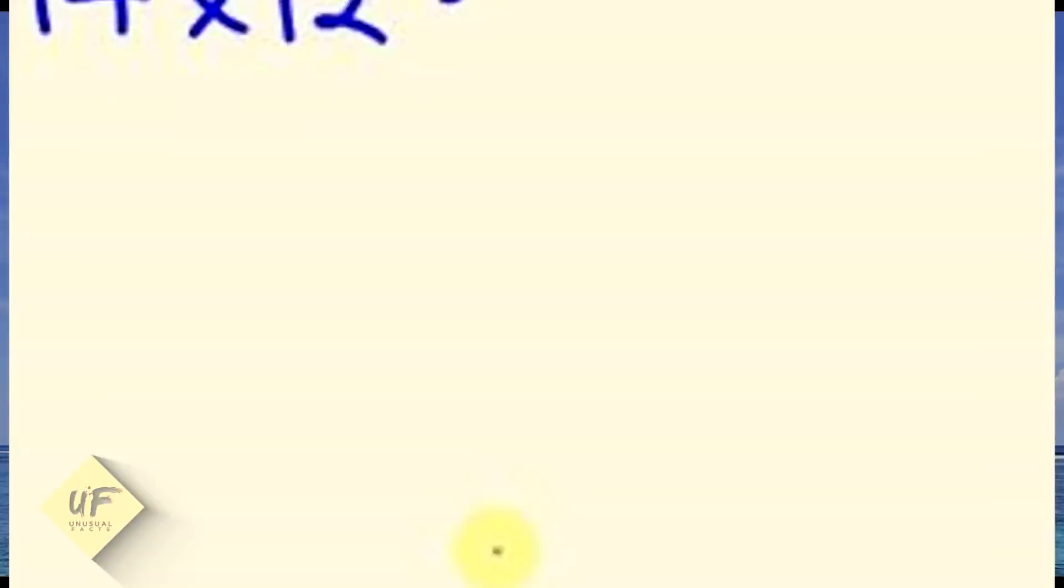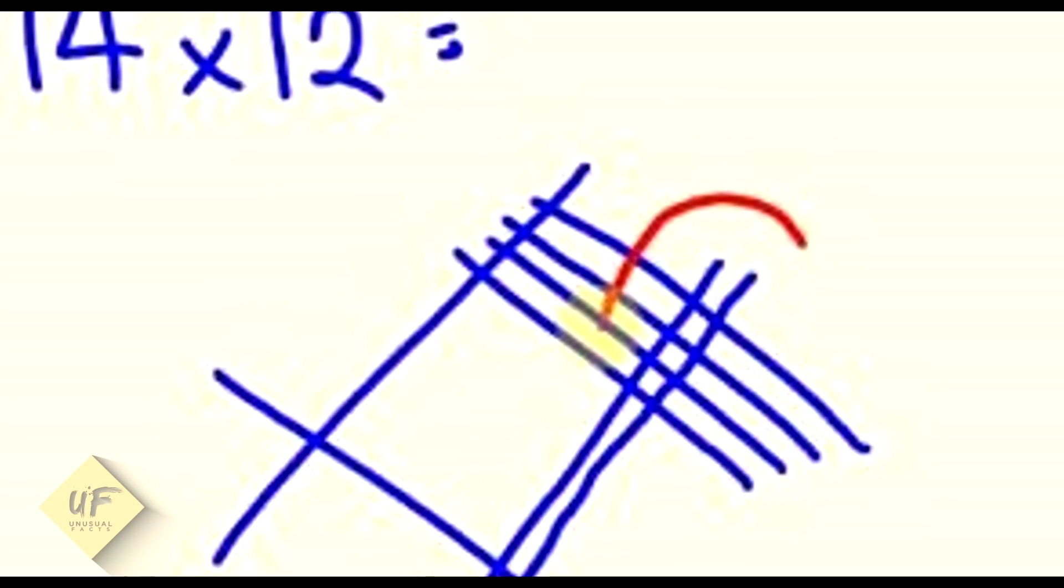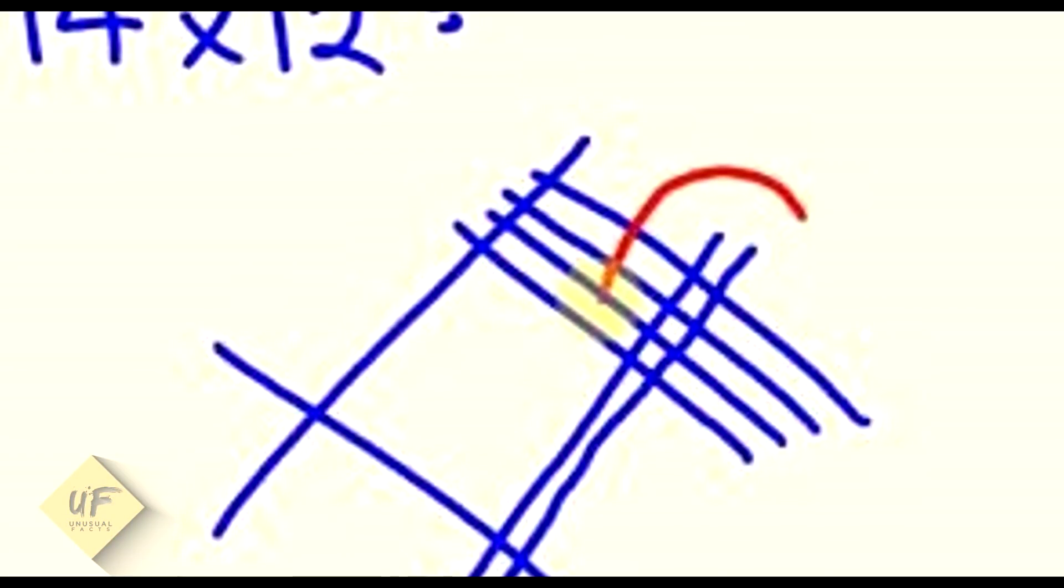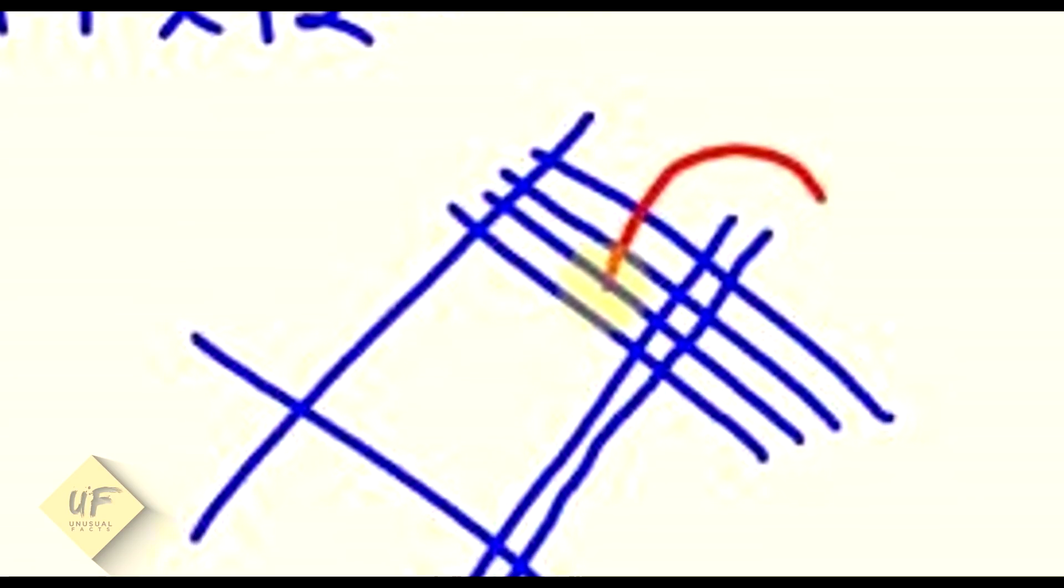Number six: Multiplying double and triple digit numbers. Another method to multiply double-digit numbers is the line method, which also works on multiplying triple-digit numbers. It is vital that you remember to maintain a left-to-right writing direction, even when drawing the lines. Begin by drawing diagonal lines to represent each digit. The other number will be drawn in a criss-cross manner as shown in the example.